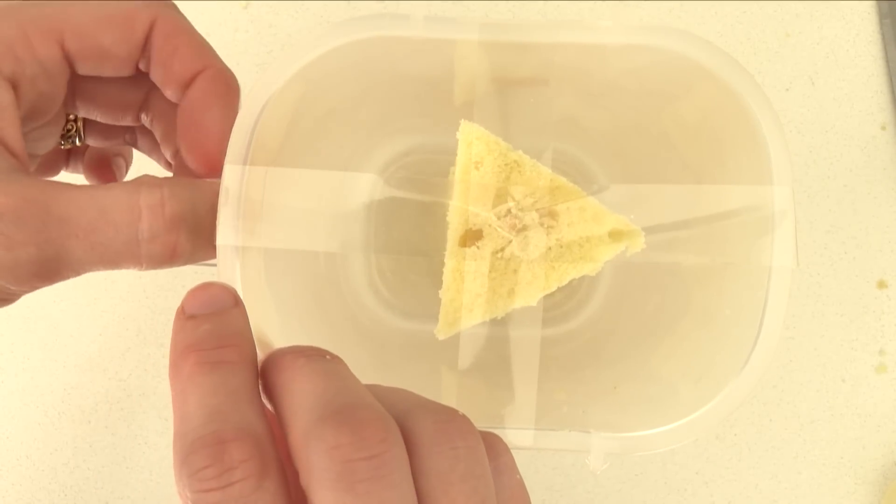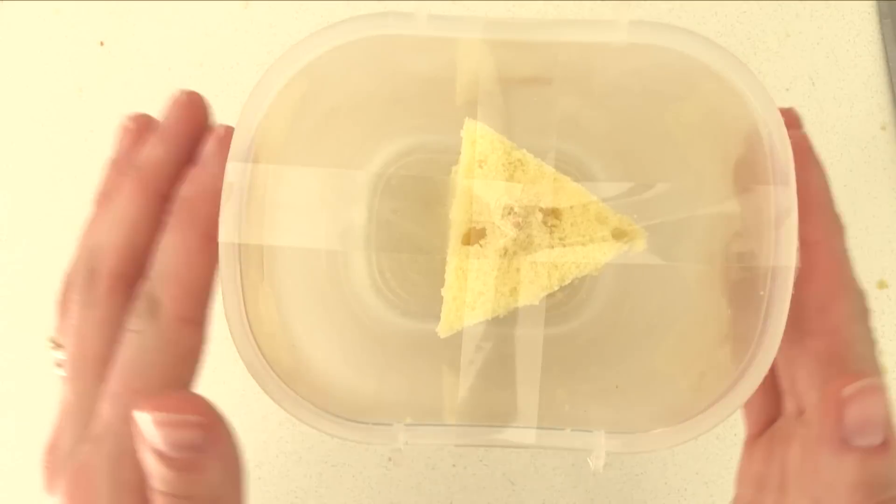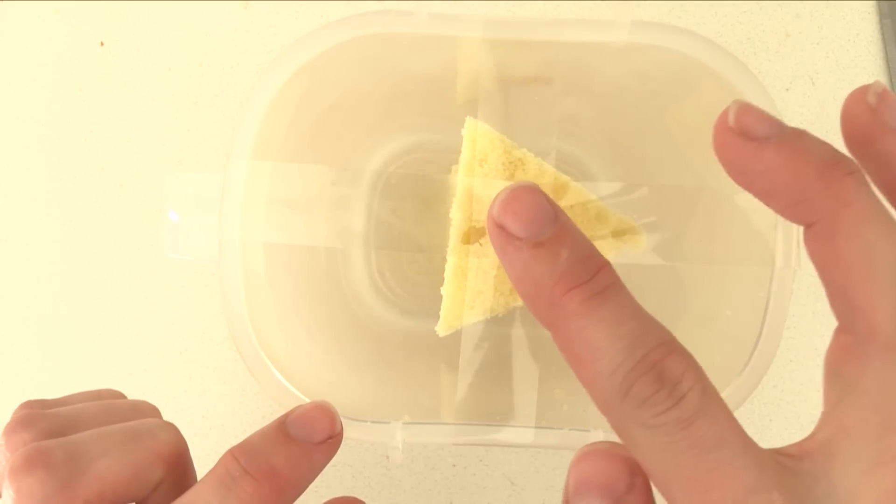Now you need to put the cake triangles in the freezer and the reason for that is we need it to be super cold so when we pour our mousse over the top the mousse doesn't soak into the cake.